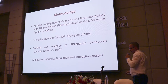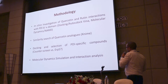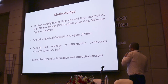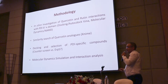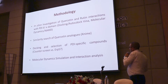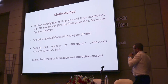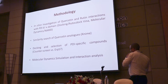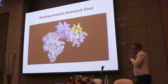Our methodology in this work is to provide an in silico investigation of quercetin and rutin — our positive and negative controls — and their interaction with the B'X domain using a docking approach. We then perform a similarity search of quercetin analogs, since rutin is considered a derivative of quercetin, followed by selection of PDI-specific compounds via a counter-screen versus ERP57, which is a close family member. Finally, we run molecular dynamics simulation and interaction analysis to understand what is happening.